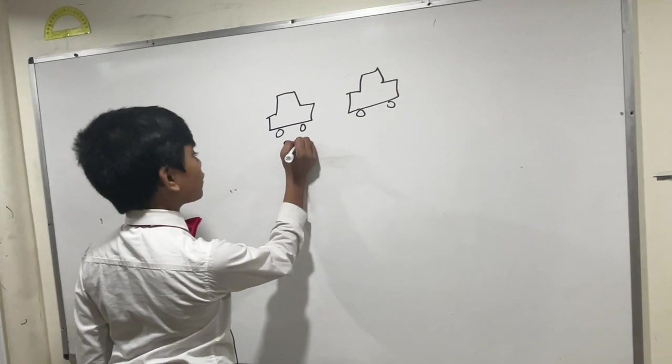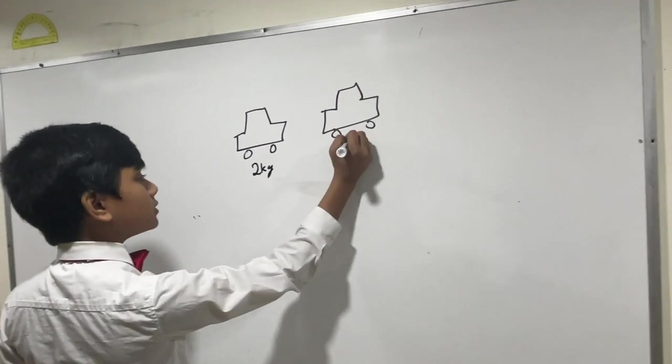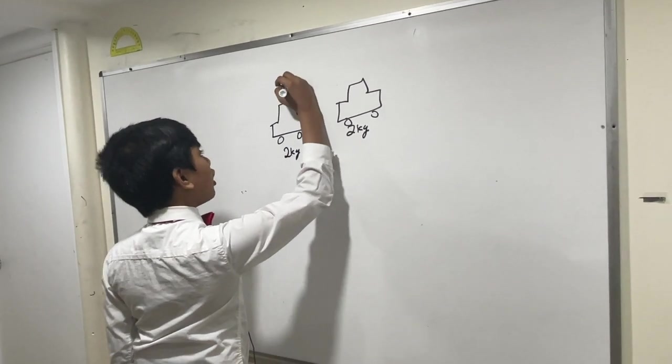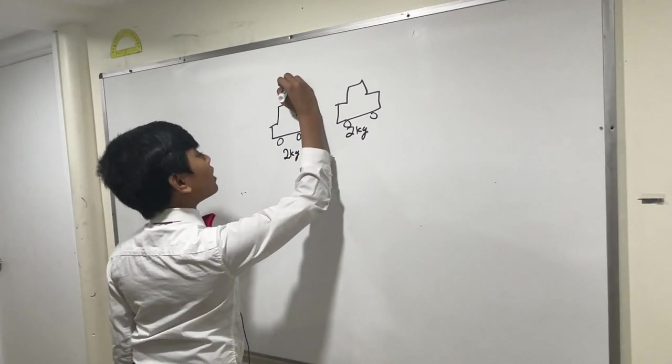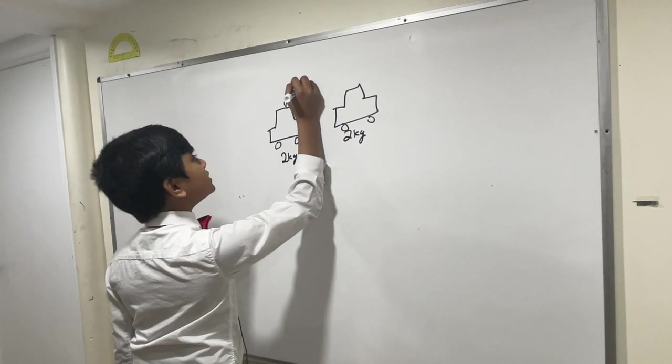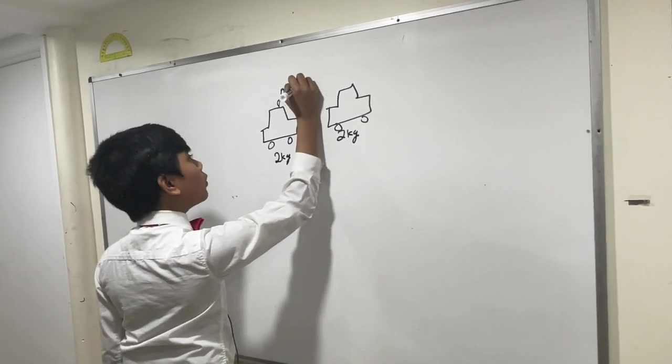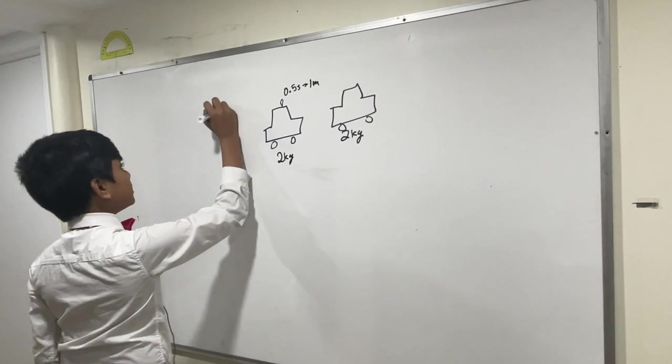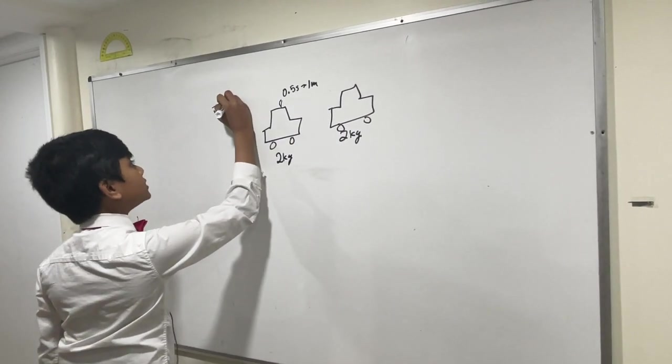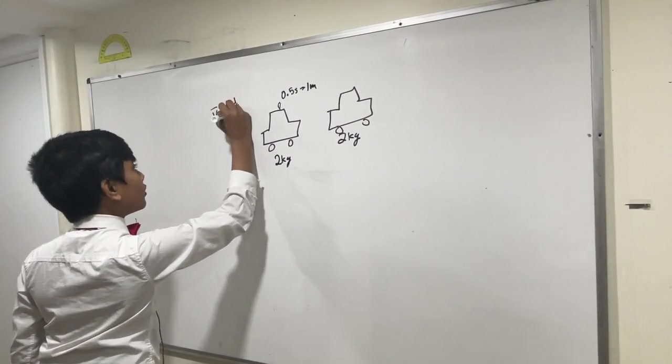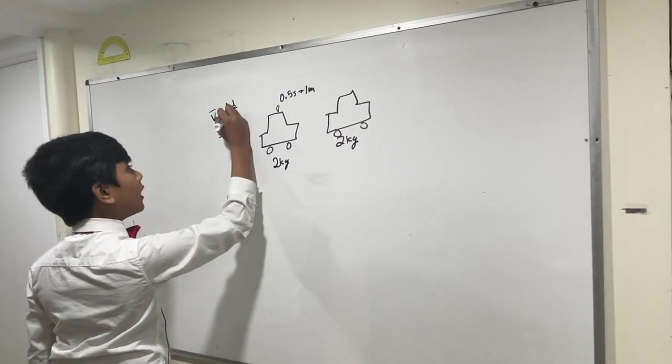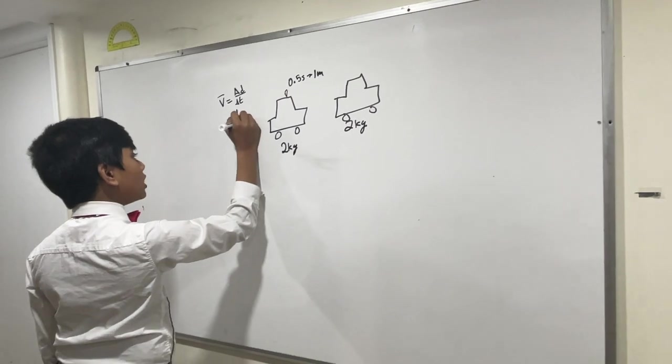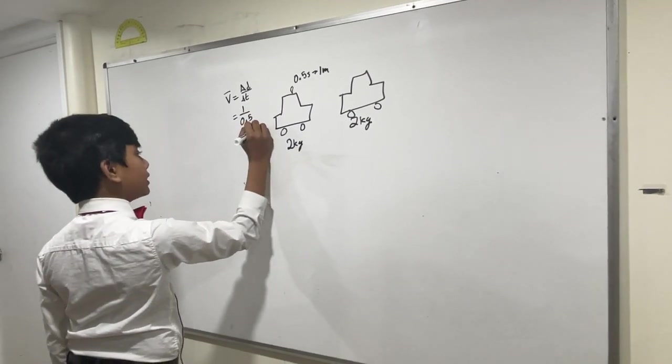We saw that both of these were 2 kilograms. And we know that this guy, this car, took 0.5 seconds to cross one meter. So now, what's its velocity? Well, velocity, or at least average velocity, is displacement over time. So, we've got 1 meter over 0.5 seconds, which is obviously just 2 meters per second.